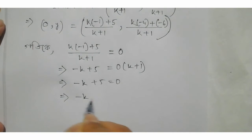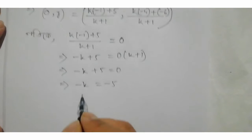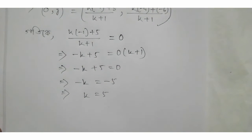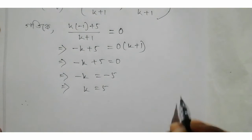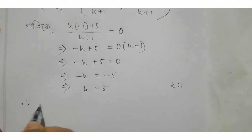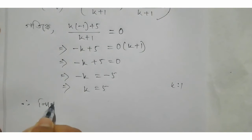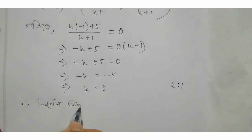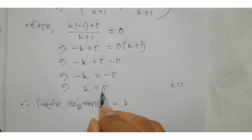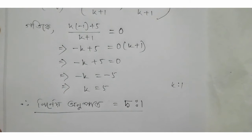Then minus k equals minus 5. So we have 6, minus minus cancel. So minus k equals 5. Here the expression becomes 5. This is 5, and here the expression value is 5.